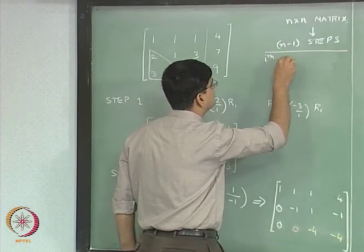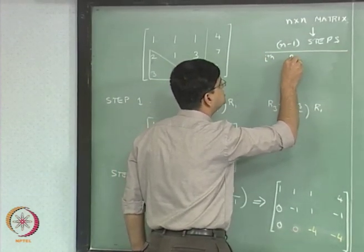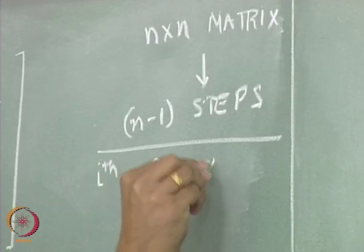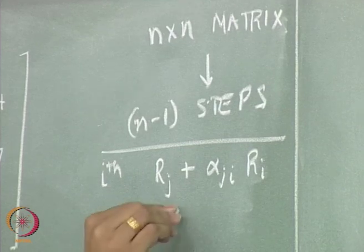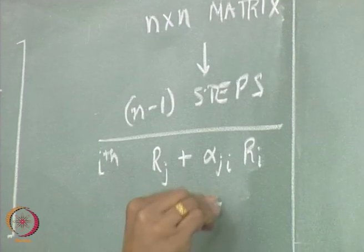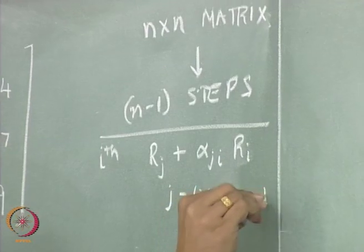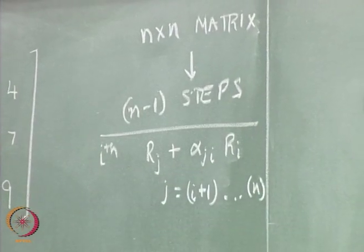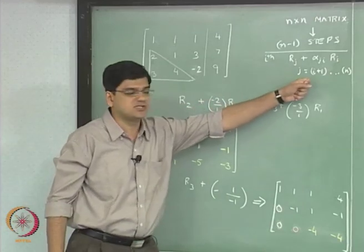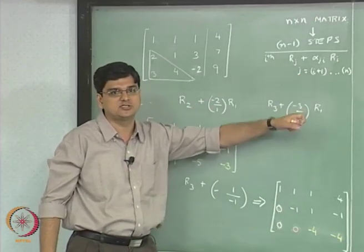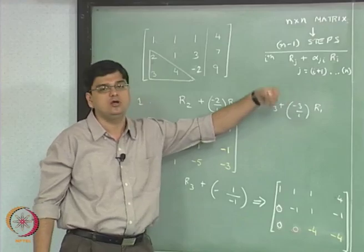In the i-th step, we do Rj plus alpha_ji multiplied by Ri, with j equal to i plus 1, i plus 1 to n. In step 1, we will change R(i+1) that is R2, R(i+2) that is R3, and so on up to Rn. In this case, n is 3, so we are changing row 2 and row 3.